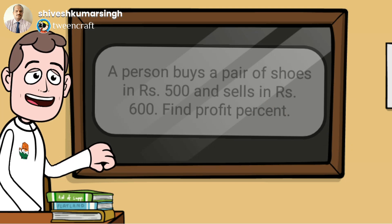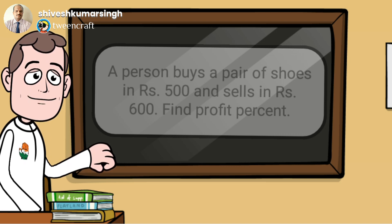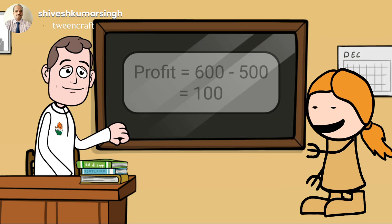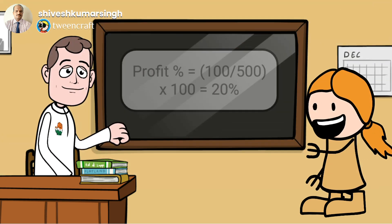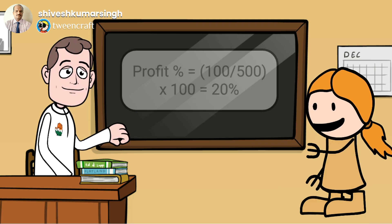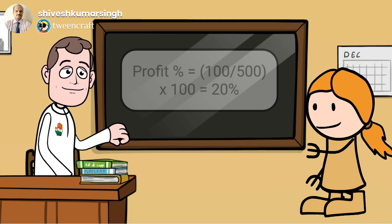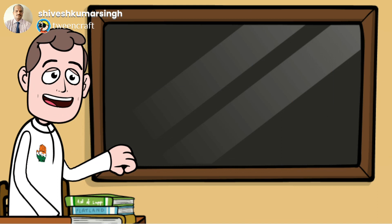Everyone try to solve this question, and after solving, Alan will come here to describe it. A person buys a pair of shoes for rupees 500 and sells them for rupees 600. Find the profit percent. We calculate profit first: 600 minus 500 equals rupees 100. Then profit percent = (100 ÷ 500) × 100, so the answer is 20%. Very good, Alan — this is absolutely right.